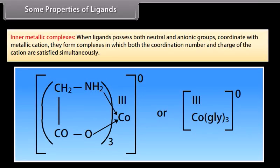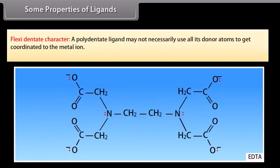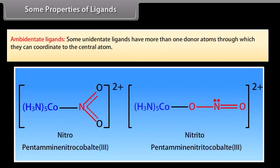Some properties of ligands: Inner metallic complexes are formed when ligands possess both neutral and anionic groups that coordinate with a metallic cation, satisfying both the coordination number and charge of the cation simultaneously. Flexidentate character: a polydentate ligand may not necessarily use all its donor atoms — for example, EDTA can act as a hexadentate, pentadentate, or tetradentate ligand. Ambidentate ligands are unidentate ligands with more than one donor atom through which they can coordinate to the central atom.